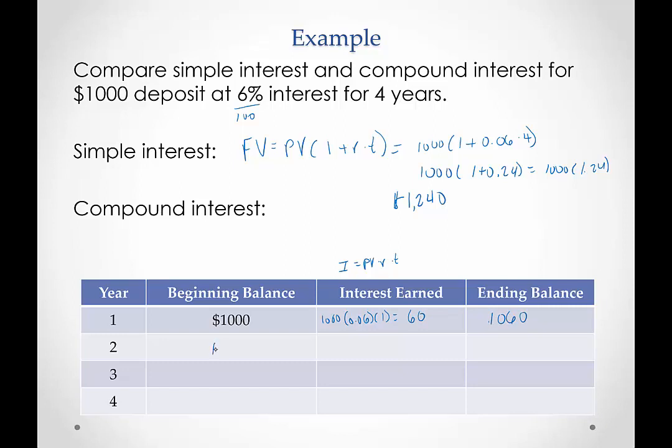Now, at the beginning of the second year, there's $1,060. To calculate the interest earned, remember, this is compound, so I earn it on all of this money, not just that 1,000. We would do 1,060 times 0.06 times the one year because we're only looking at this single year. When we do that, we end up with $63.60. So the ending balance will be the beginning balance plus the interest earned for that year. So it's going to be $1,123.60.